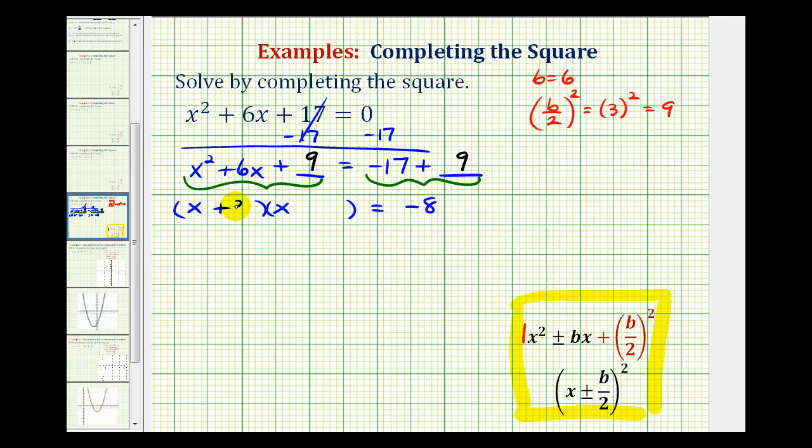So we have plus 3 here and plus 3 here. So notice how we have two equal factors, verifying that this is a perfect square trinomial. And we can write this as the quantity x plus 3 squared equals negative 8.